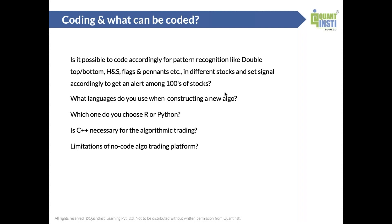There were many questions which can be put together into these variations. First things first - what can be coded? Whatever you can think of in a certain logical manner, computers process in a binary way. Our brains are way more complex than even the most advanced computers, but they're getting there. So whatever you can think of, that can be coded - plain and simple.